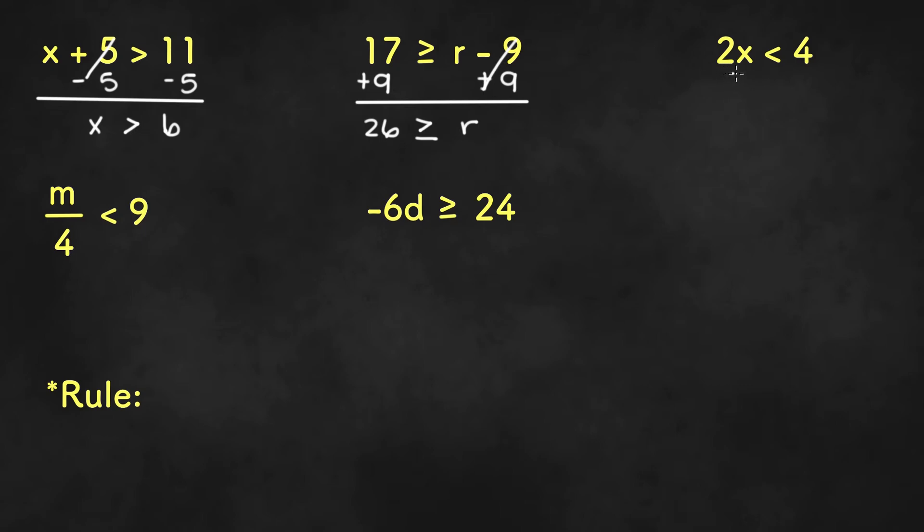Now in this equation we'll just be dividing by 2 to get x, and we'll be left with x is less than 4 divided by 2 or 2.